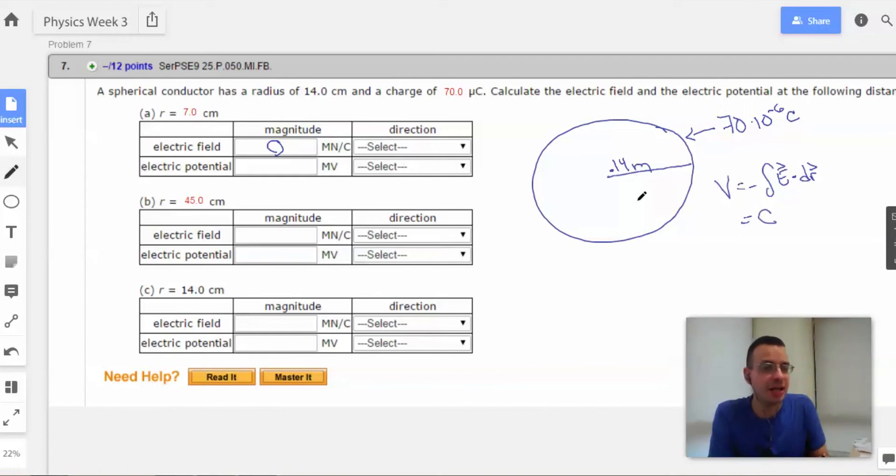Basically, I'm saying that it's a constant. So if you take a charged particle over here, move it into the circle. Moving it anywhere in the circle is going to be just as hard as moving it to any other spot in the circle.